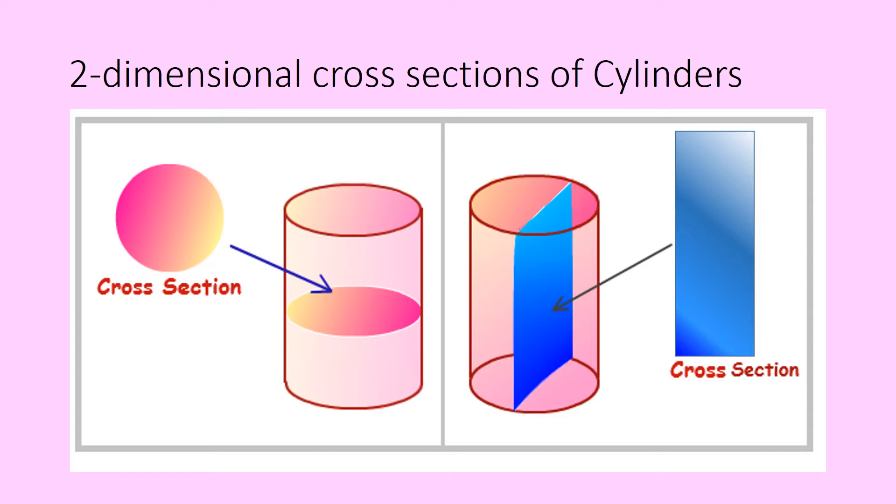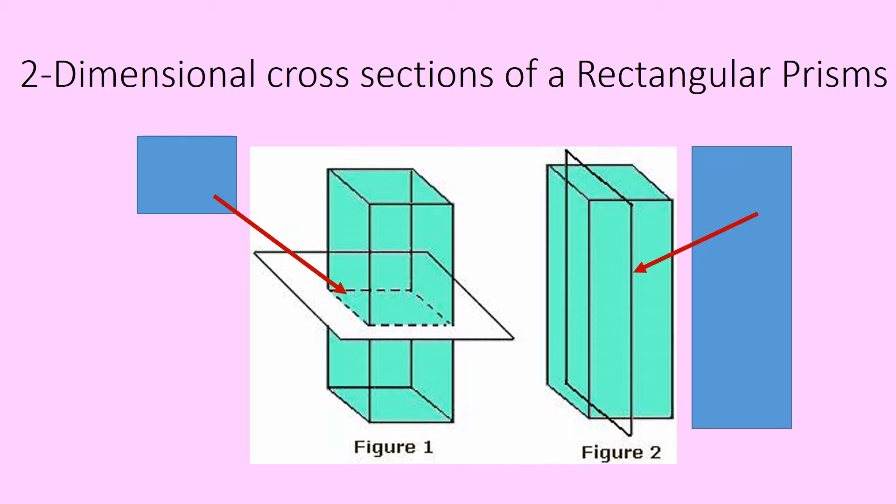Alright, let's go on. I am looking now at a rectangular prism. If I cut it horizontally, I'm going to get basically the top of it, and in this case it's a rectangle. If I cut it vertically, you will also get a rectangle.